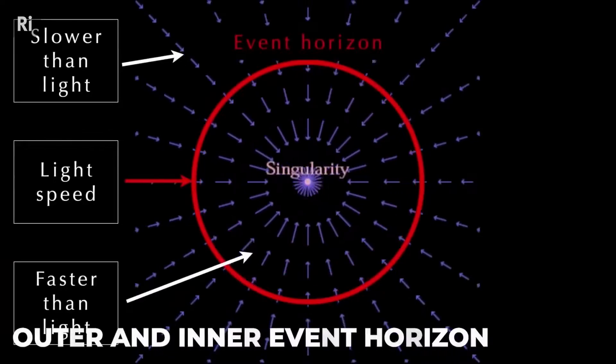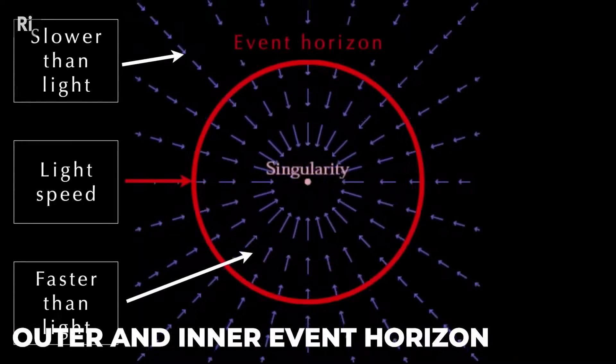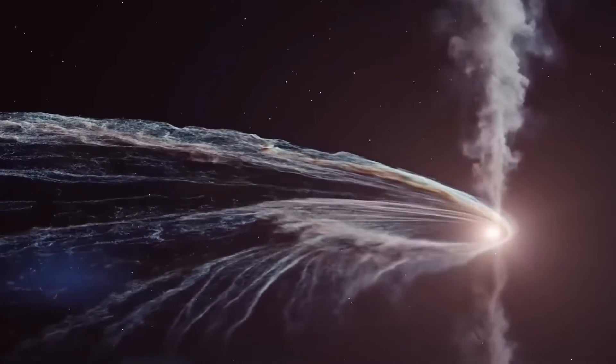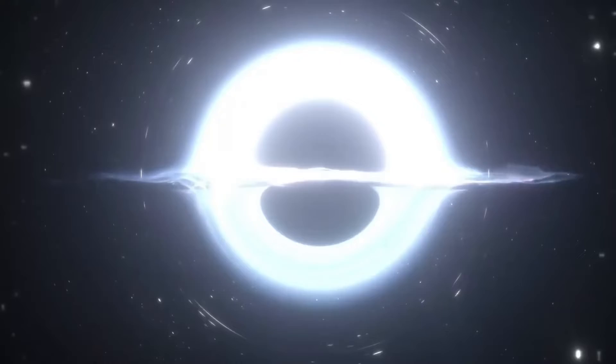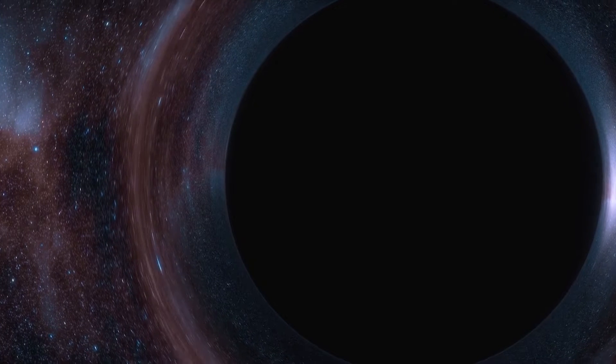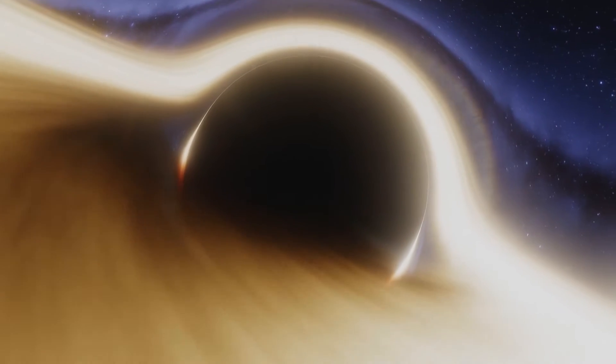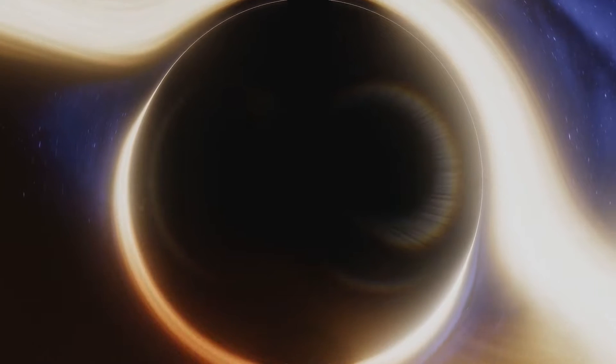Black holes have three layers: the outer and inner event horizon and the singularity. The event horizon of a black hole is the boundary around the mouth of the black hole, past which light cannot escape. Once a particle crosses the event horizon, it cannot leave. Gravity is constant across the event horizon. The inner region of a black hole, where the object's mass lies, is known as its singularity, the single point in spacetime where the mass of the black hole is concentrated.